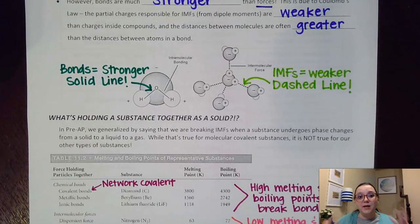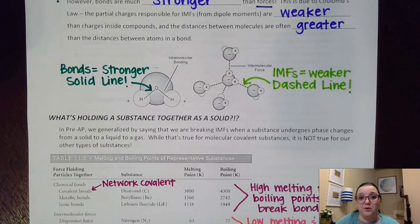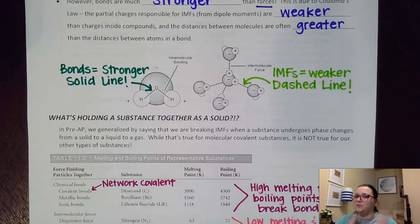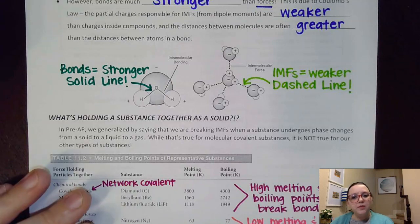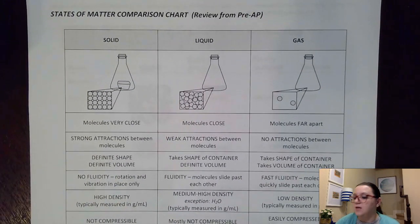We have to be careful about what kind of attractions we're breaking as we go from a solid to a liquid to a gas, because it really impacts the melting points and boiling points we're going to have. As a quick reminder, solids, liquids, and gases are compared in a table toward the end of the notes.